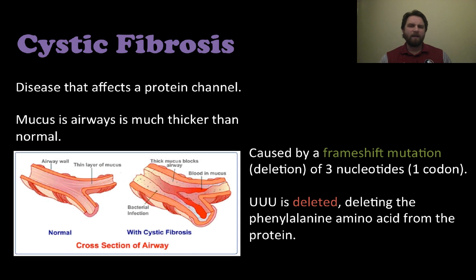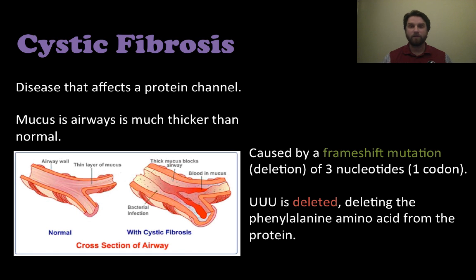An example of a frameshift mutation is cystic fibrosis — a disease that affects protein channels involved with chloride ions and water movement. The mucus in the airway of someone with cystic fibrosis is much thicker than normal, causing serious breathing problems and usually early death if not kept under control. This is caused by a deletion of three nucleotides — one whole codon, UUU — which deletes the entire amino acid phenylalanine from the protein, causing it not to function properly.